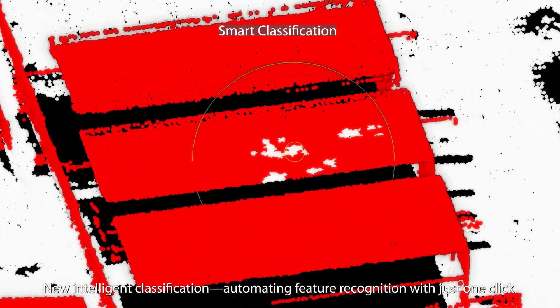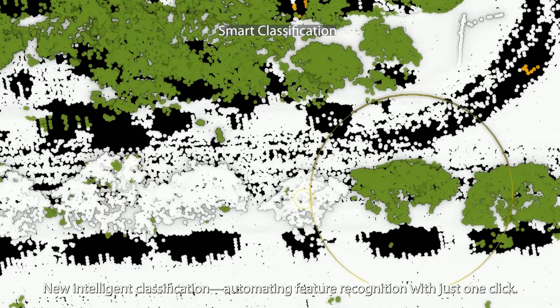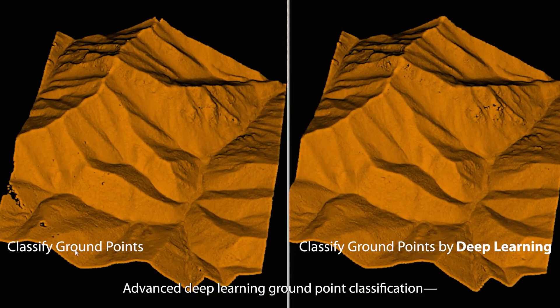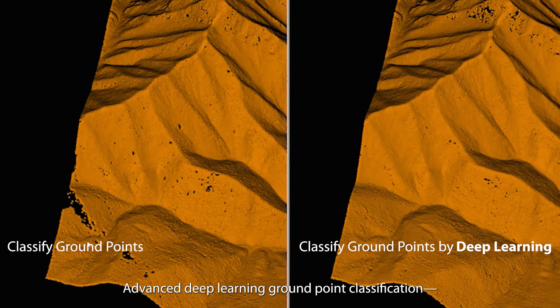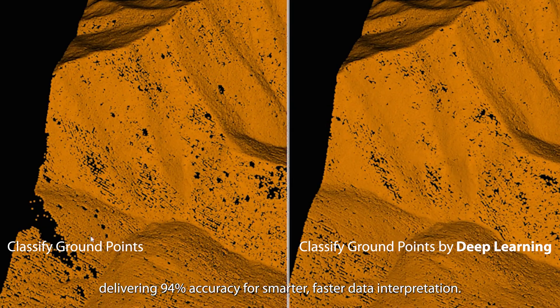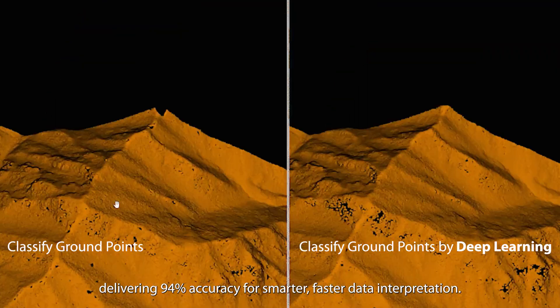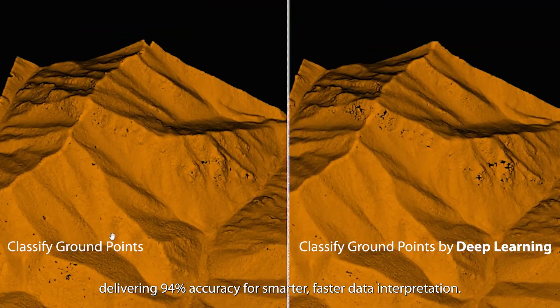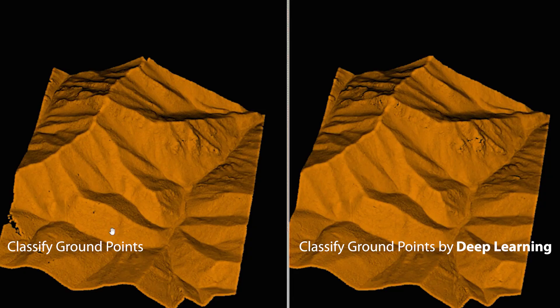New intelligent classification automating feature recognition with just one click. Advanced deep learning ground point classification delivering 94% accuracy for smarter, faster data interpretation.